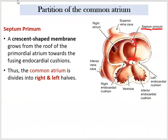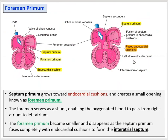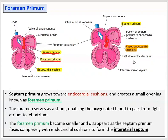The septum primum grows from the roof of the atrium down until it reaches the endocardial cushion. There is a small opening here — the septum is septum primum and the foramen is foramen primum. This is the first foramen. However, this foramen will close by the fusion of septum primum to the endocardial cushion. How does the fetal heart compensate for this closure?